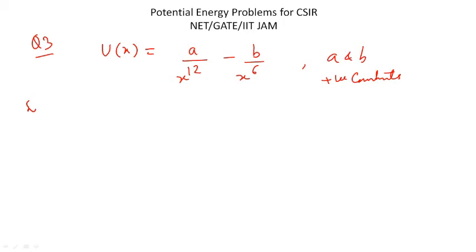Now it can be solved as, when your U(x) is 0, that means you will find two values. One will be x equal to infinite, and the other will be x equal to a upon b to the power 1 by 6.